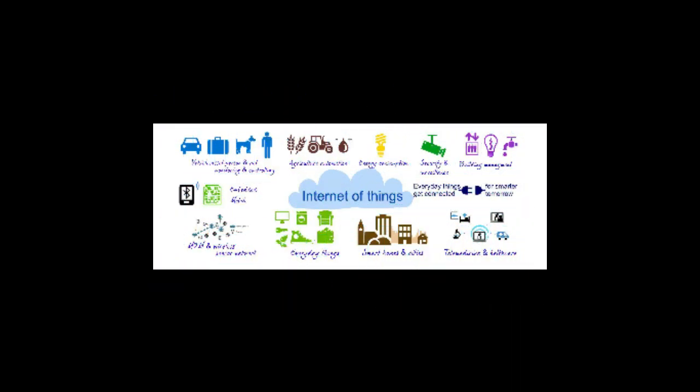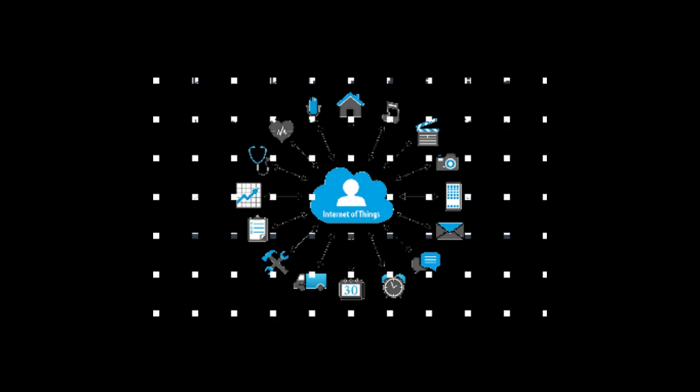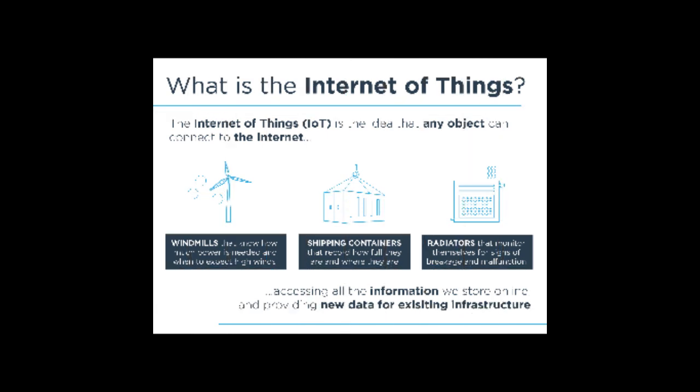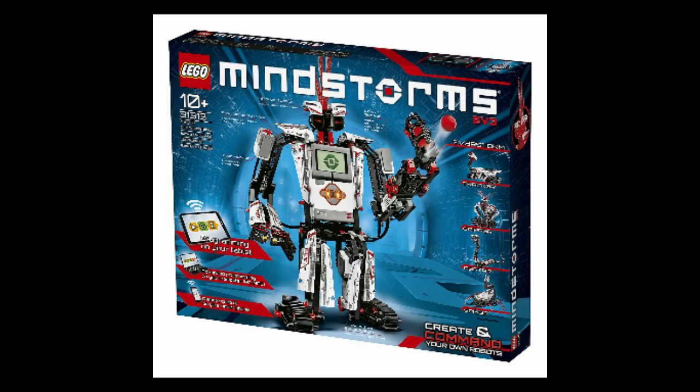The Internet of Things is the network of devices such as vehicles and home appliances that contain electronics, software, sensors, and connectivity, which allows these things to connect, interact, and exchange data. Let's start with robotics learning.